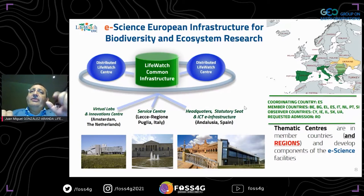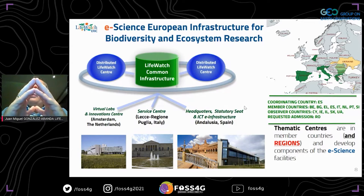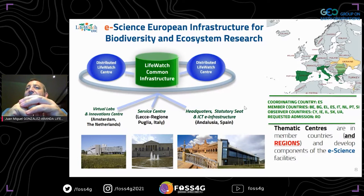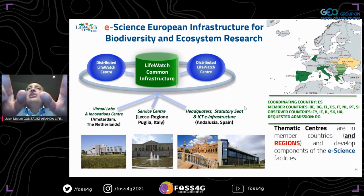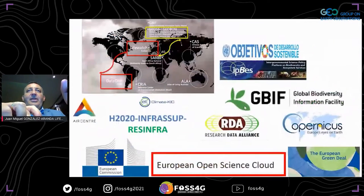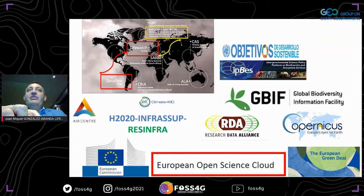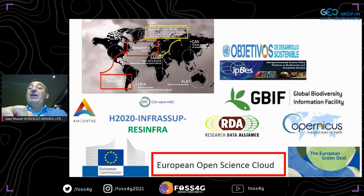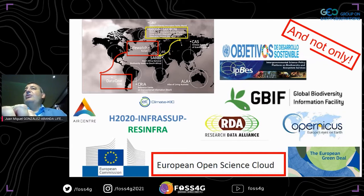Our headquarters and main ICT coordination office are in Spain, in the Andalusia region — Seville and Malaga. The service center is in the Puglia region of southern Italy, and the Virtual Lab and Innovation Center is in Amsterdam, the Netherlands. We collaborate with GBIF, the Research Data Alliance, Copernicus, NASA, the European Open Science Cloud, and the Space for Sustainable Development Goals initiative.